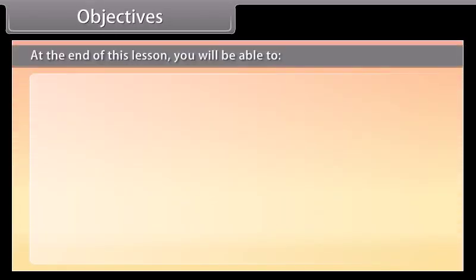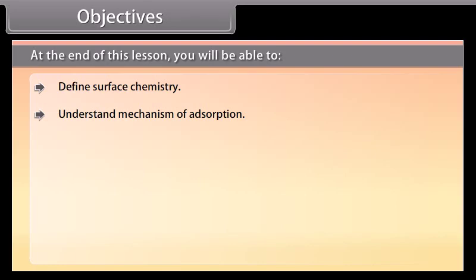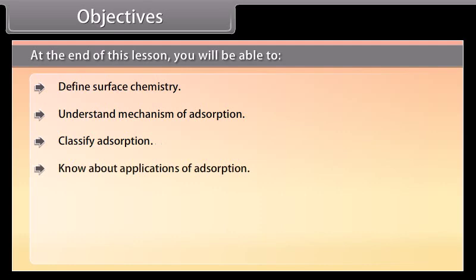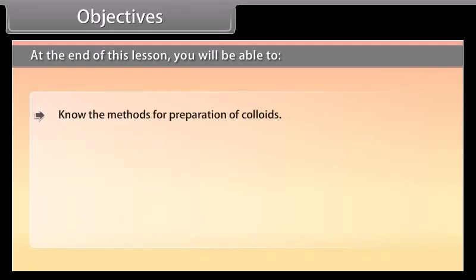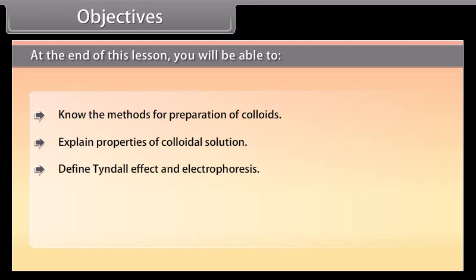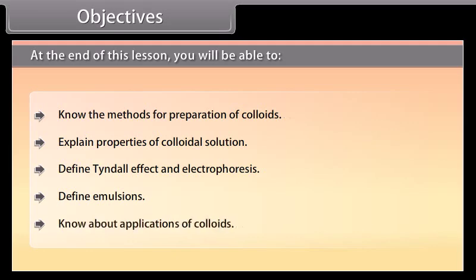At the end of this lesson, you will be able to: define surface chemistry; understand the mechanism of adsorption; classify adsorption; know about applications of adsorption; define and classify catalysis; analyze the mechanism of enzyme catalysis; define and classify colloids; know the methods for preparation of colloids; explain properties of colloidal solution; define Tyndall effect and electrophoresis; define emulsions; and know about applications of colloids.